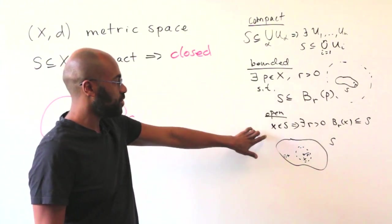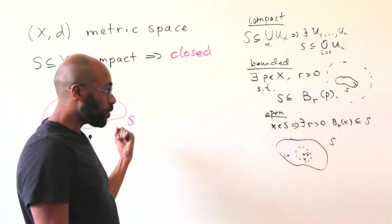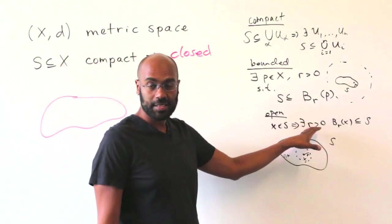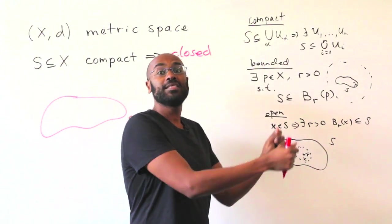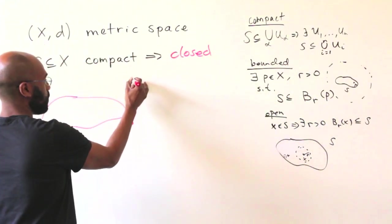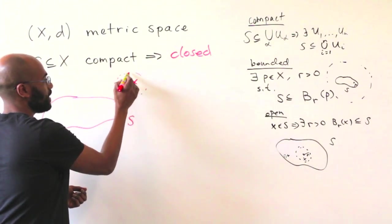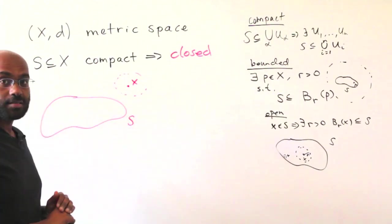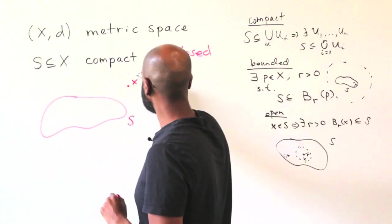To prove its complement is open, we need to show that for any point that is in the complement, we have a radius, some radius, so that the ball of that radius around that point sits inside of the complement. So we're picking like a point outside here, right, and we need to know that there's an open ball around it that stays outside of S. So how do we go about doing that using the fact that S is compact?